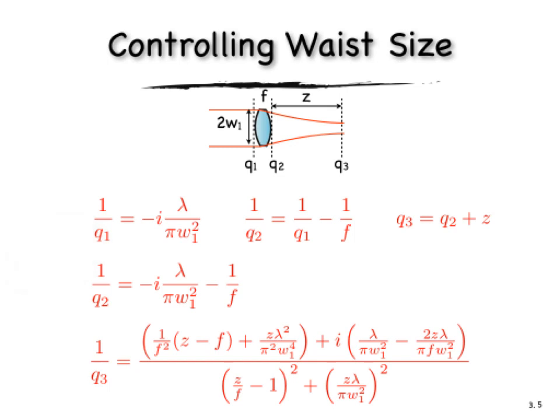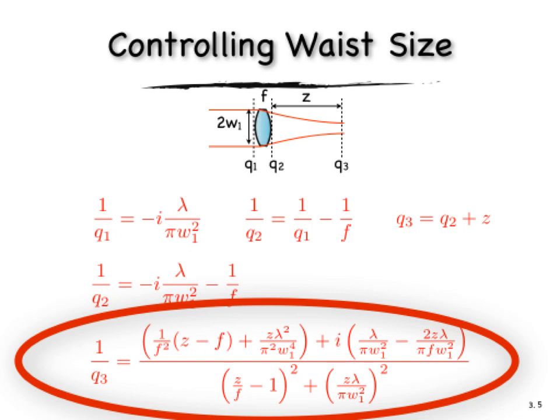Propagating through the lens, parameter Q1 transforms to Q2 using the relationship shown in the top middle. And then after the lens, going from position 2 to position 3, a distance of Z, the Gaussian beam Q parameter transforms as shown, Q3 equals Q2 plus Z. That's shown in the top right. So we can start with Q1, plug it into the expression for Q2, get an expression for Q2, plug that into the expression for Q3, and that's what's written on the bottom equation.